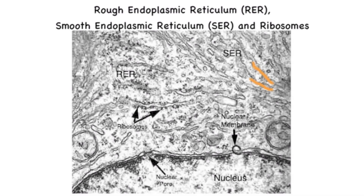Here we will identify eukaryotic cell structures from an electron micrograph. You can differentiate between the smooth endoplasmic reticulum and the rough endoplasmic reticulum because, although both of them are networks of tubules, the rough endoplasmic reticulum is associated with ribosomes — highlighted here in red — which are present on the electron micrograph as little black dots.